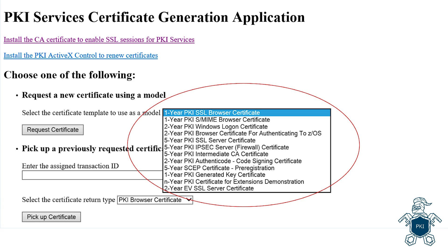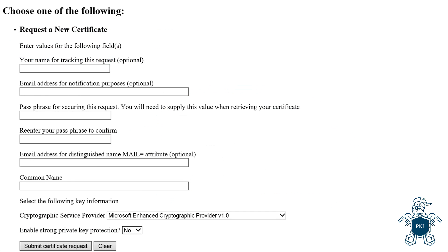Once PKI services is set up for certificate provisioning, the requester can request a certificate from this webpage. Different types of certificates for different purposes are provided. Suppose the first option — one-year PKI SSL browser certificate — is chosen to request a certificate to be installed in the browser. The requester fills in the required information for the certificate content. After filling in the information needed, click on Submit.